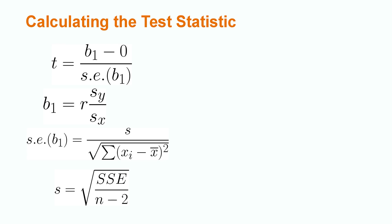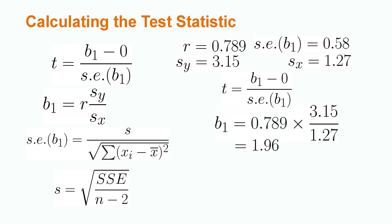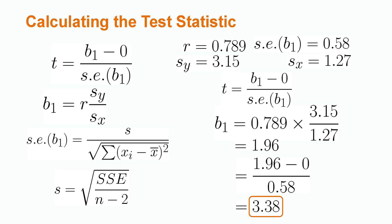Let's say we have an r-value of 0.789, a standard error of beta1 of 0.58, a standard deviation of 3.15 for y, and a standard deviation of 1.27 for x. In order to compute the t-statistic, we would first need to find the value of beta1 by multiplying r by the standard deviation of y over the standard deviation of x. This gives us a value of 1.96. We then subtract 1.96 from 0 and divide by the standard error of beta1, 0.58. This gives us a t-statistic of 3.38.